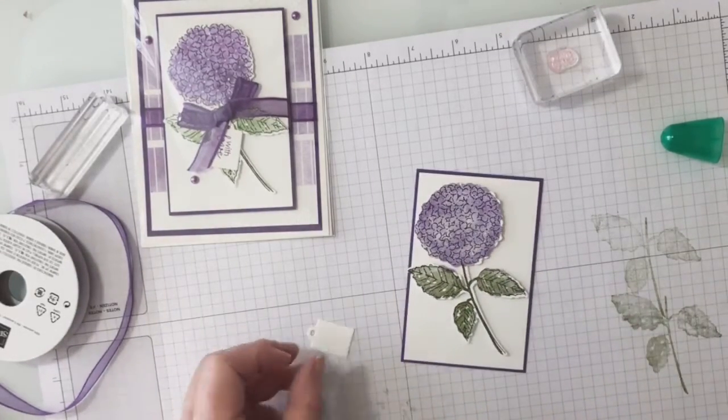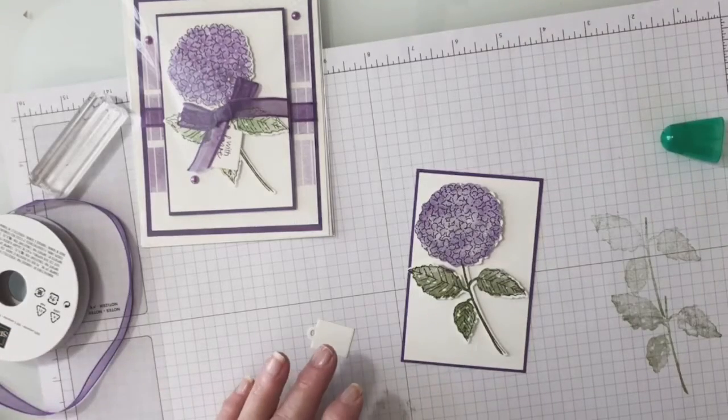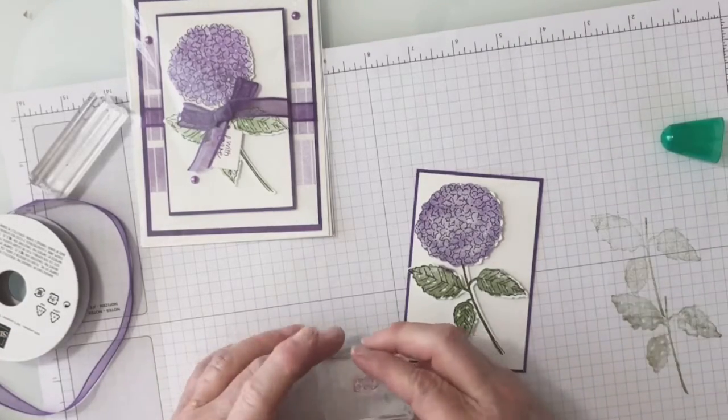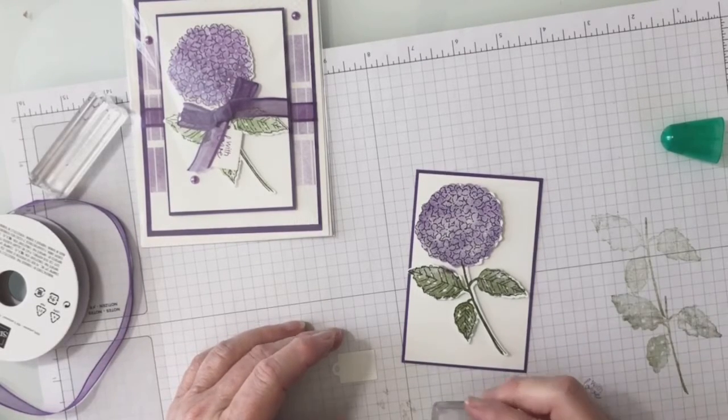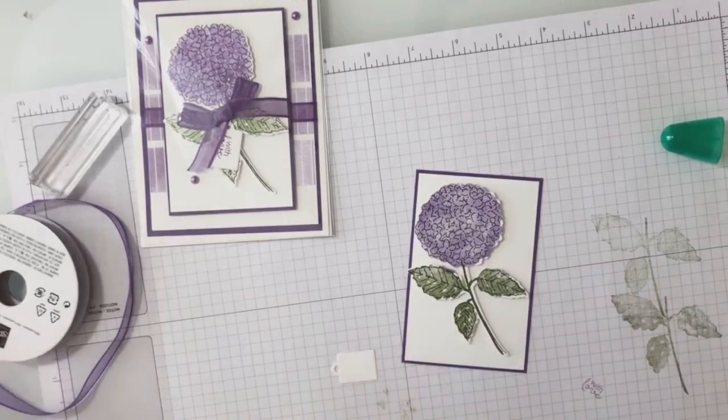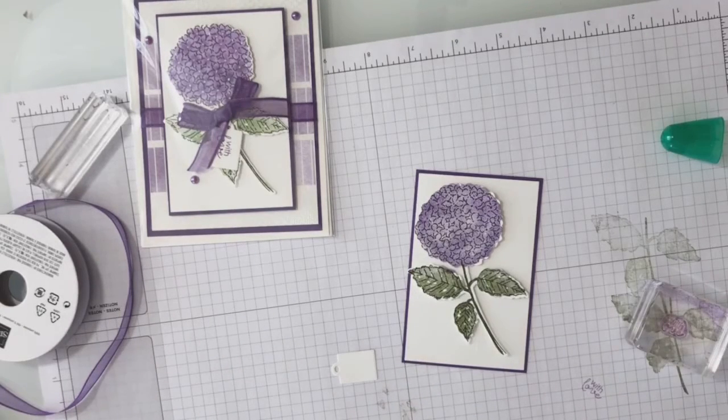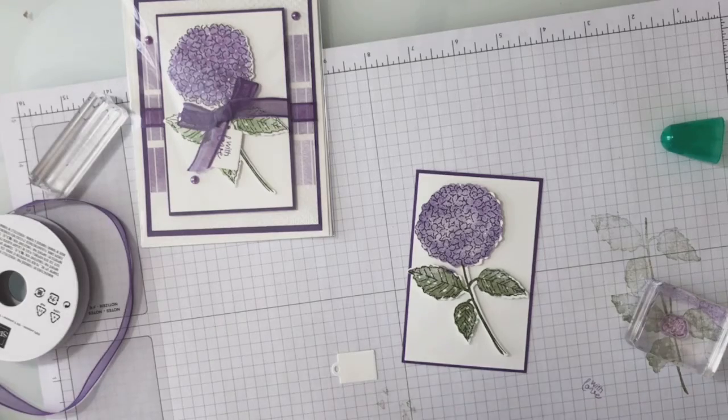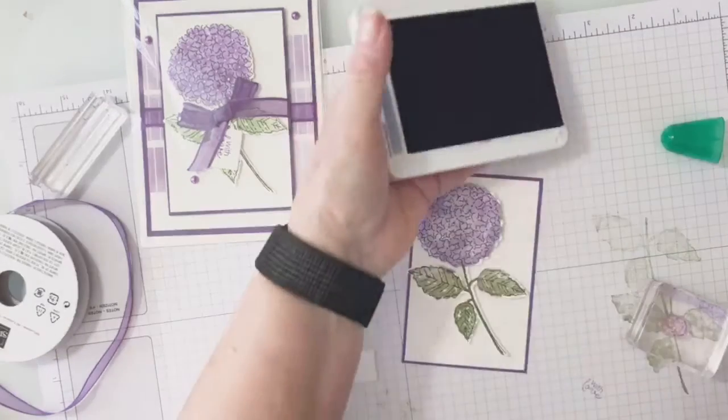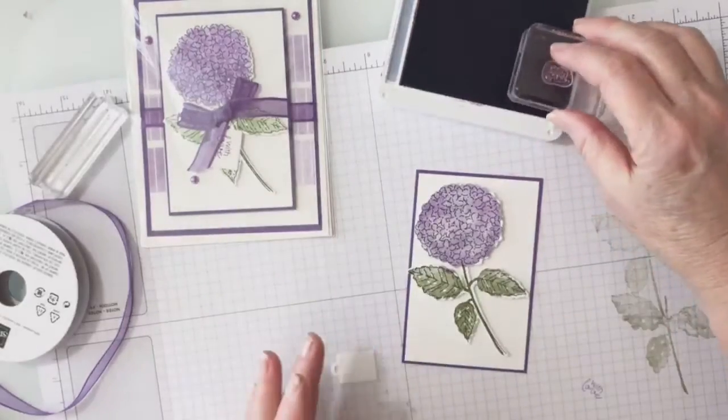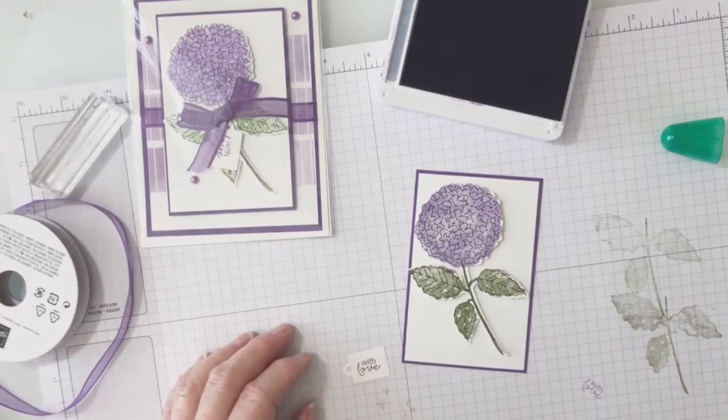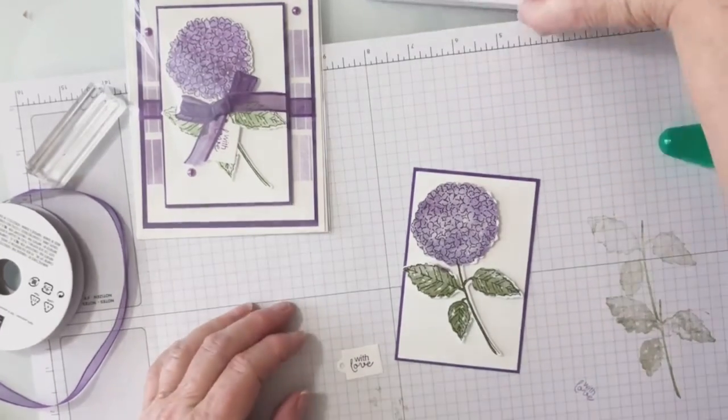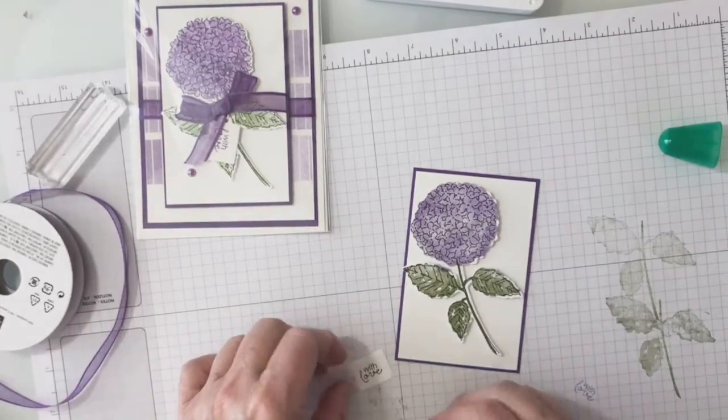And then I'm going to stamp the little greeting that says with love on my little tag. You should have a little tag in your kit. And I think I want to do that in gorgeous grape. It's a little darker, so I'm going to put my gorgeous grape right here. It's just a little darker so it'll give me a little bit better. There we go, that is better. So it could be stamped in black as well.